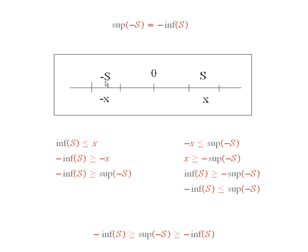Now, take something in minus S, namely minus x. So, minus x is less than or equal to the supremum of minus S, by definition, because this is an upper bound, the least upper bound, in fact.